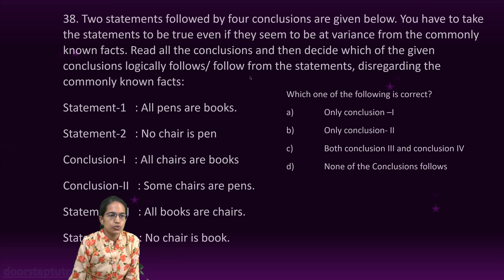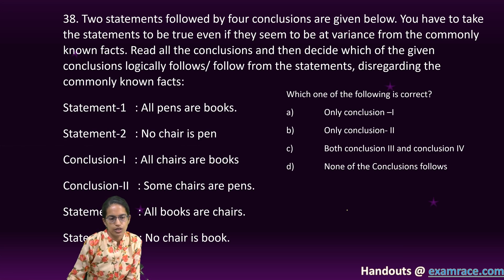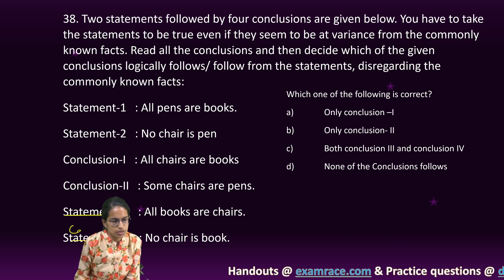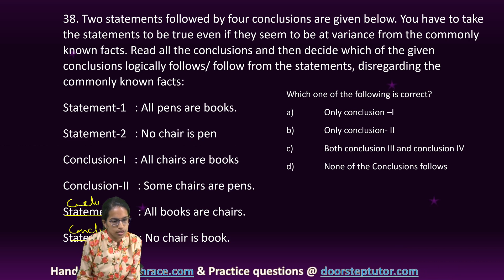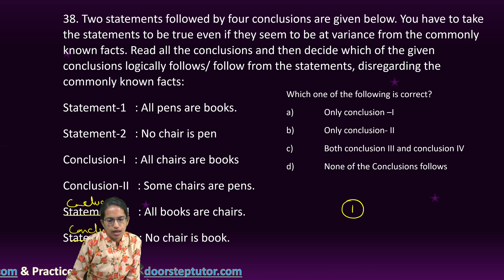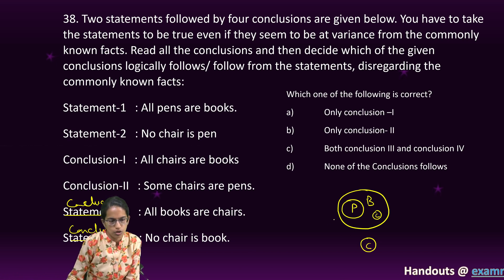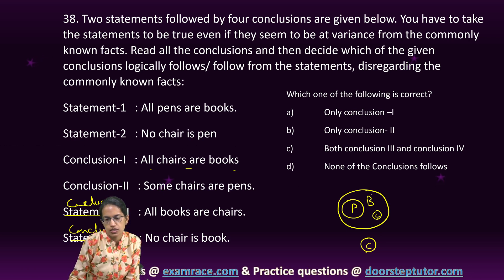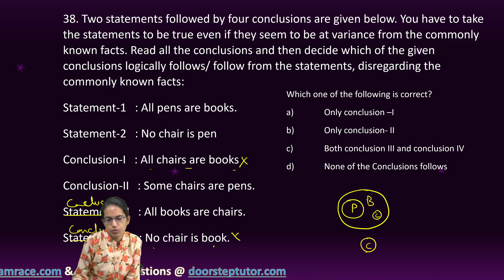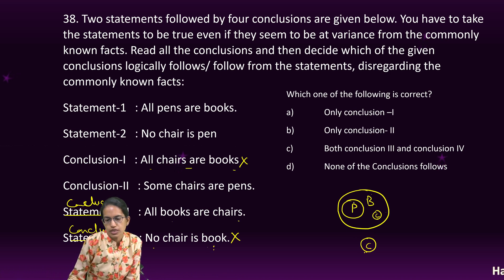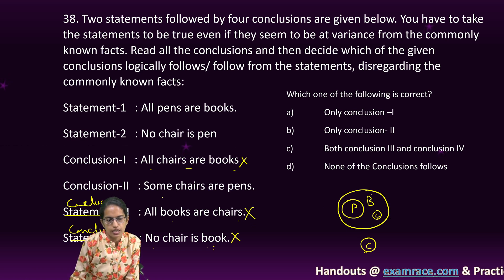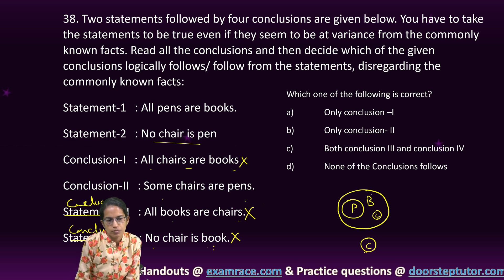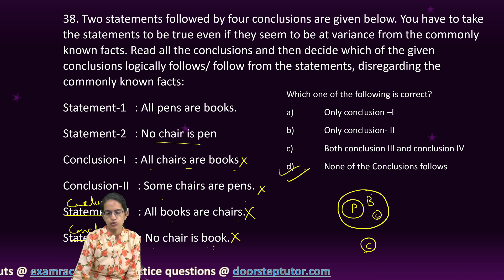The next question is, there are two statements and four conclusions. Sorry. It's incorrectly written. So, these are conclusions. All these four are conclusions. Now, all pen are books. No chair is a pen. So, chair can be here. A chair can be here. Any of the combinations can be there. Now, all chairs are books. If all the chairs are here, I can say they are books. But chair, if it is here, it cannot be books. So, this conclusion is not correct. No chair is book. Again, the same thing. If it is outside or inside would determine. If it is inside, then this becomes false. All books are chair. That's incorrect. Because book is the superset. So, that's again incorrect. Some chairs are pen. Cannot be possible. Because no chair is a pen. So, this is not possible. So, none of these conclusions follow correctly.